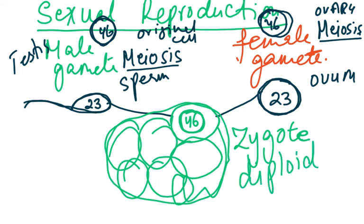Sexual reproduction is defined as a process involving the fusion of haploid nuclei to form a diploid zygote and the production of genetically dissimilar offspring. If a couple has four sons or four daughters, they are all different because different chromosome combinations and alleles are present in each zygote.